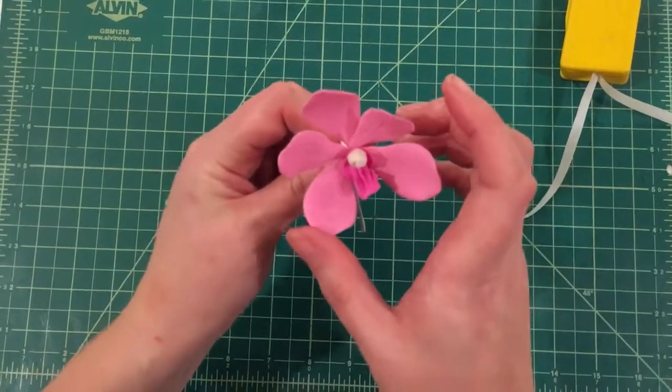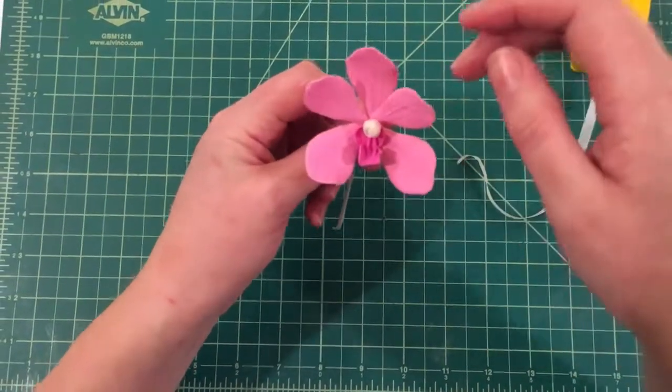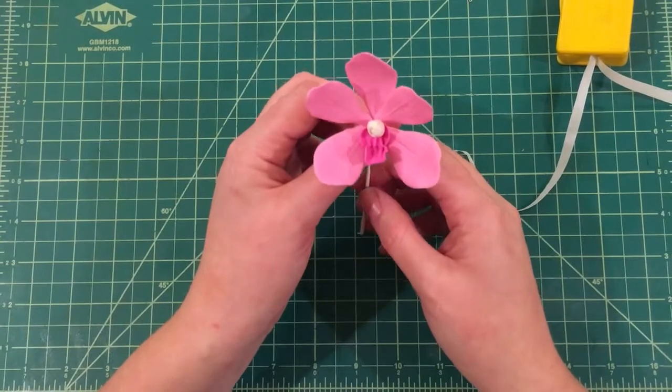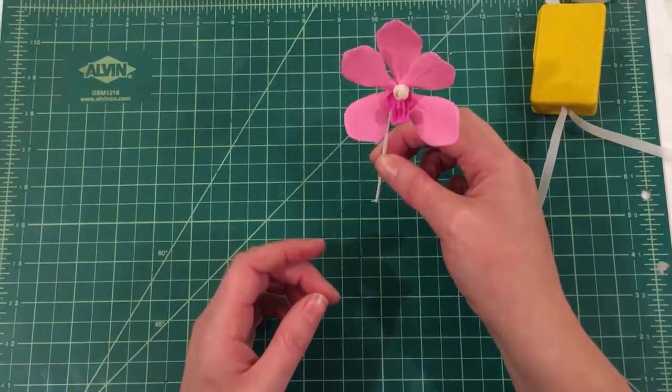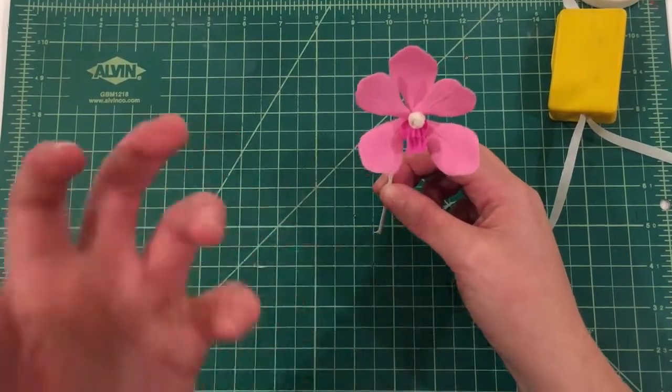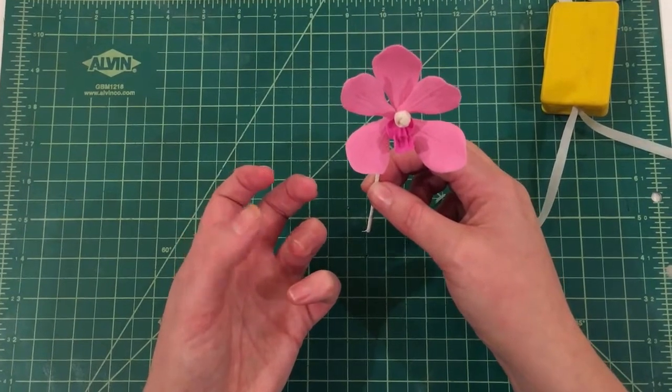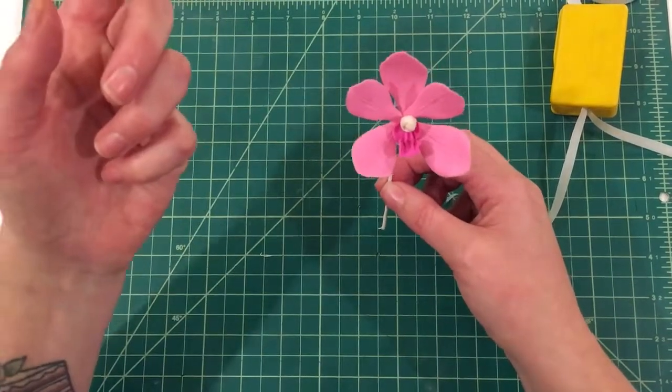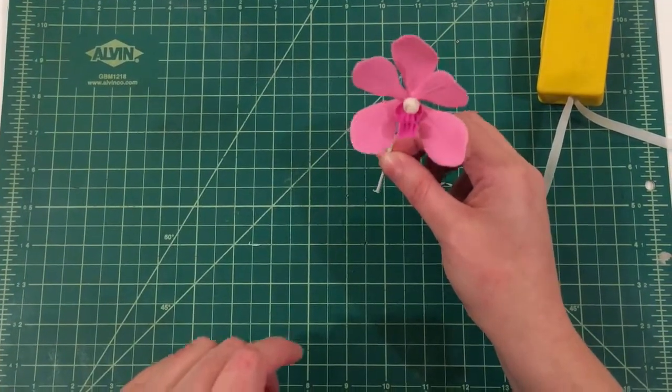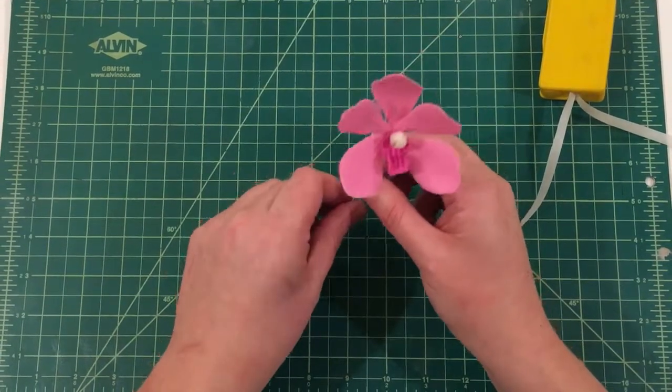And there you go. You got a Makara orchid. Ready for some dusting. And I'm going to show you guys how to assemble a cluster. You can always use an individual orchid like that by itself. But I like doing them on actual branches of orchids. So we're going to make some buds next and then show how to assemble a full branch.